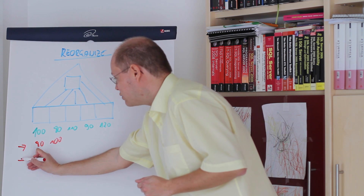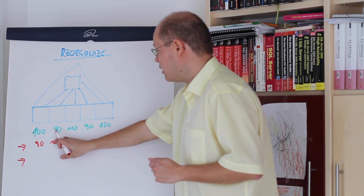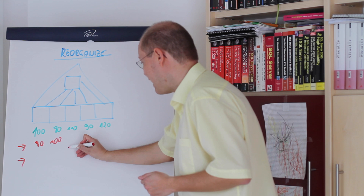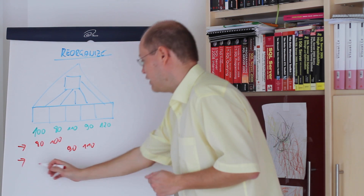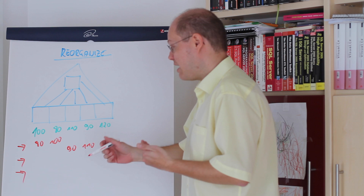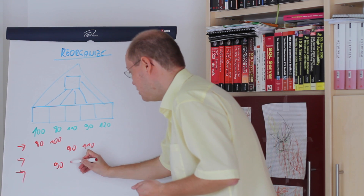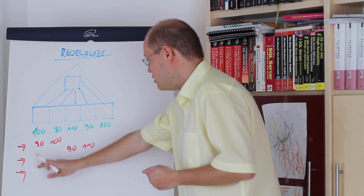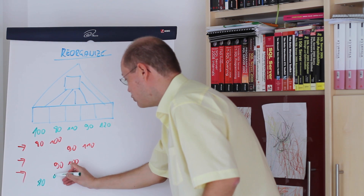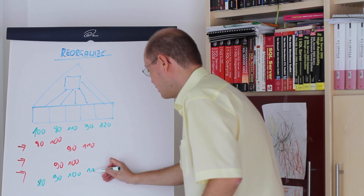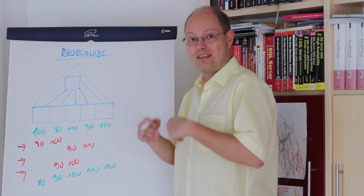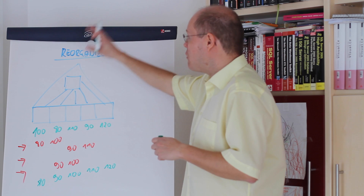Then in the next system transaction we have page IDs 80, 100, and 90 — 90 is out of order so we swap both pages. Then in the third system transaction, 90 still needs to be swapped with 100. Now looking at those page IDs you have first page 80, second page 90, then 100, 110, and 120 — meaning with three internal system transactions we were able to get rid of that index fragmentation with a reorganize operation.